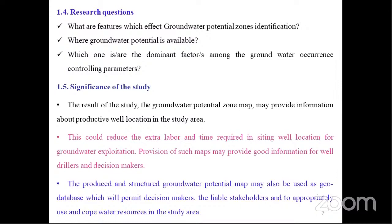There are three research questions: what are the features which affect groundwater potential zone identification? Where are the groundwater potential zones available? And which is the dominant factor among the groundwater controlling parameters? The significance of this study is that the result of groundwater potential zone mapping may provide information about productive well locations. This could reduce the extra cost and time required in siting well locations for groundwater exploration, and the maps may provide good information for well-led decision-makers and stakeholders.